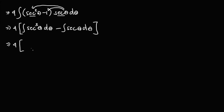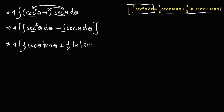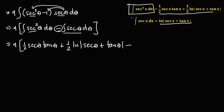We have 4 times the integral of secant squared theta minus 1 times secant theta d theta. Distributing, this becomes 4 times the integral of secant cubed theta d theta minus the integral of secant theta d theta. The integral of secant cubed theta equals one-half secant theta tangent theta plus one-half ln of the absolute value of secant theta plus tangent theta. The integral of secant theta is ln of the absolute value of secant theta plus tangent theta.